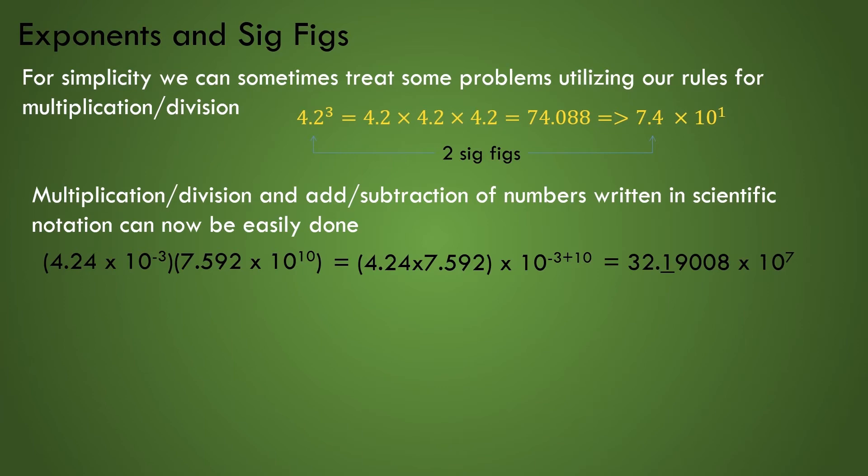Now all we have to do is put everything back together, obtaining the value 32.19008 times 10 to the power of 7. To determine the correct sig figs, we only look at the first part of the computation, the 4.24 times 7.592 part. We see that the value 4.24 has the smallest number of sig figs, 3 in this case, so that is why we underline the 1 in the result, and we finish by rounding off the value, giving us 32.2 times 10 to the power of 7.